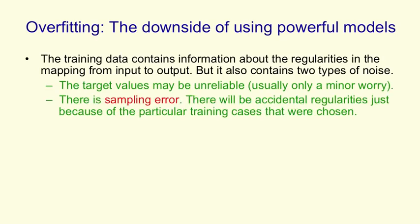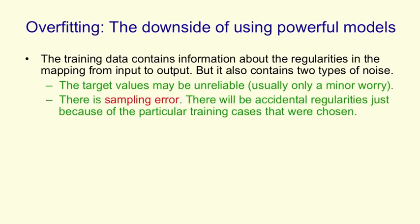The second type of noise is the sampling error. If we take any particular training set, especially if it's a small one, there'll be accidental regularities that are caused by the particular cases that we chose. So for example, if you show someone some polygons, if you're a bad teacher, you might choose to show them a square and a rectangle. Those are both polygons, but there's no way for someone to realize from that that polygons might have three sides or seven sides. There's no way for them to understand that the angles don't have to be right angles.